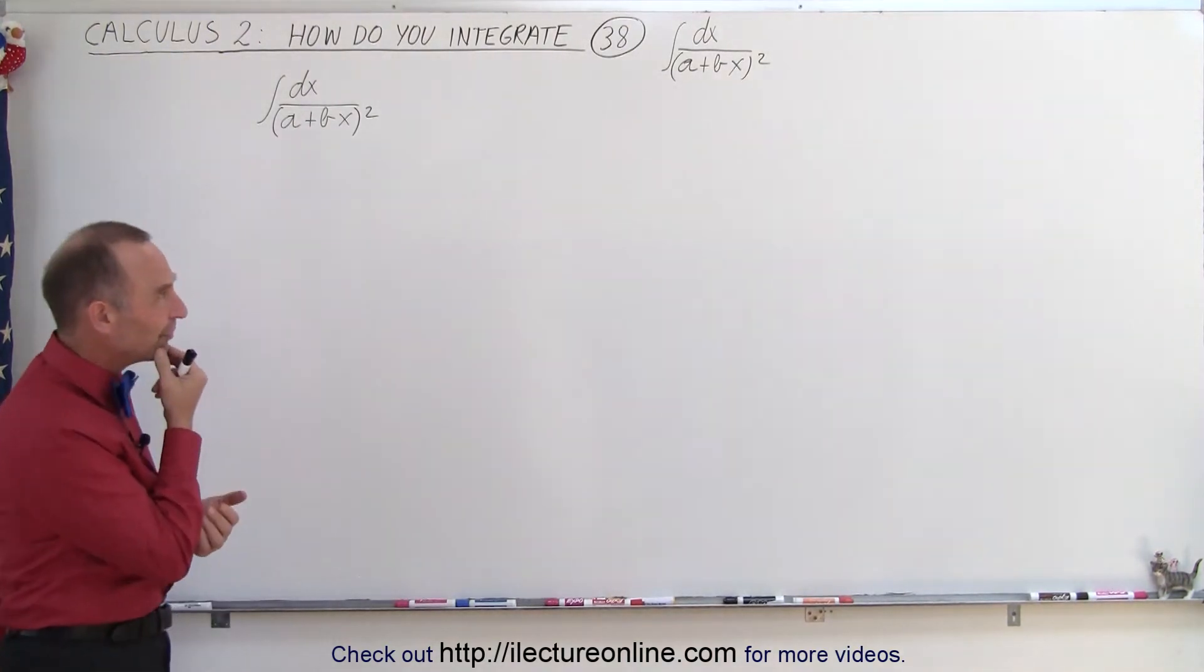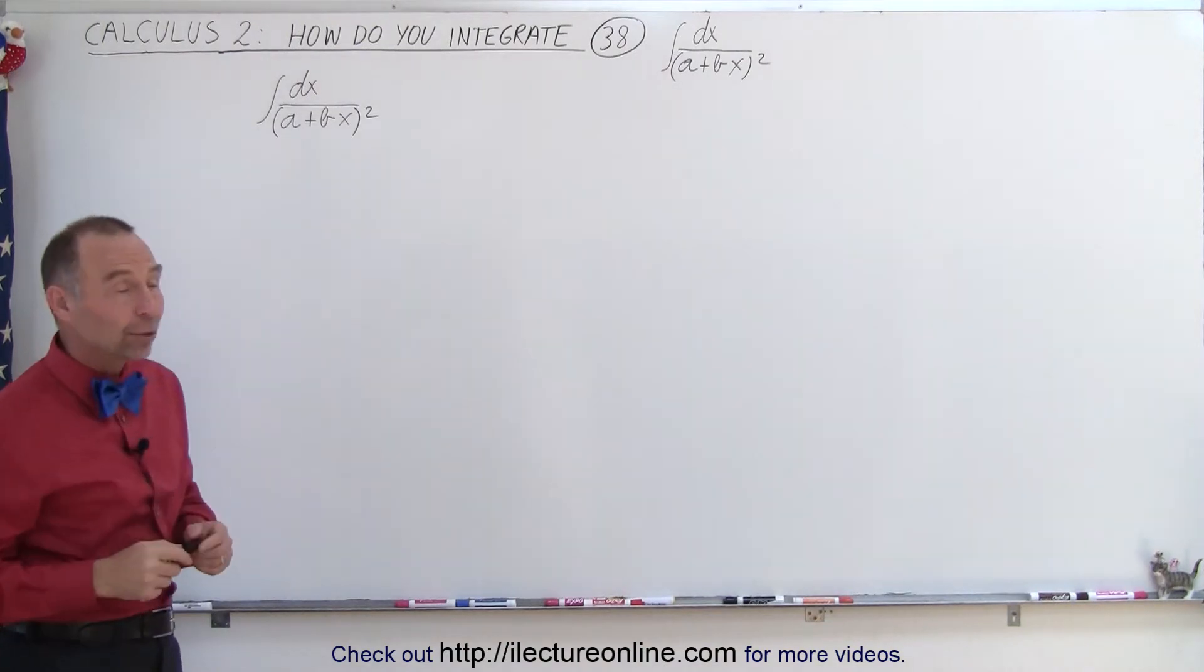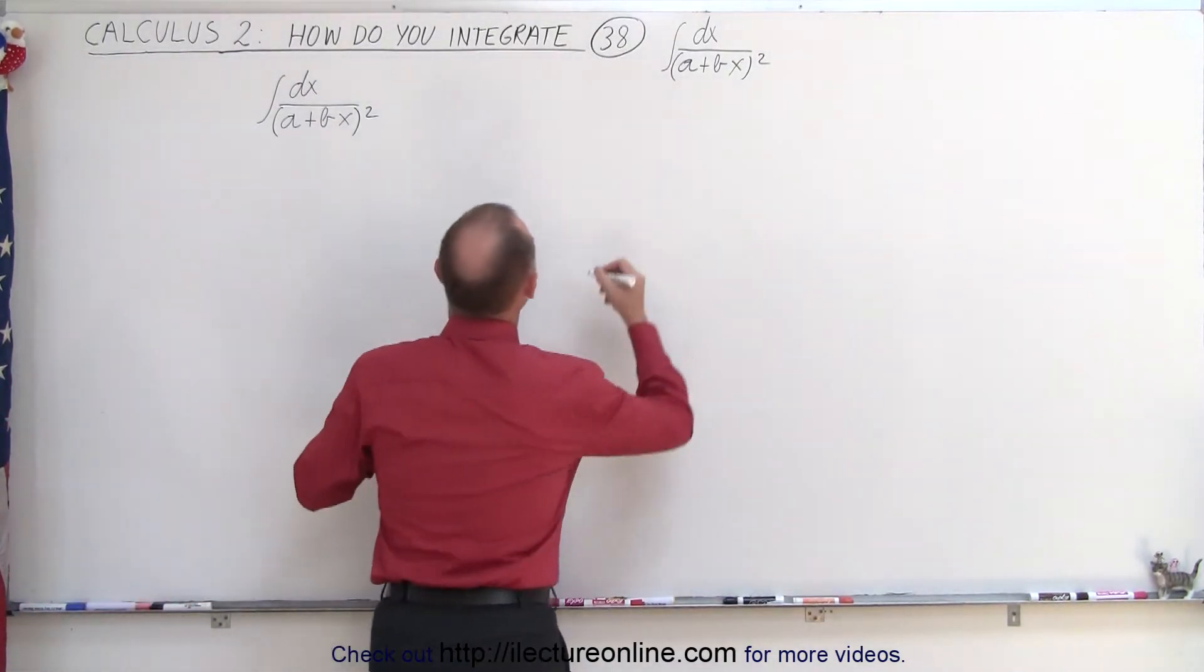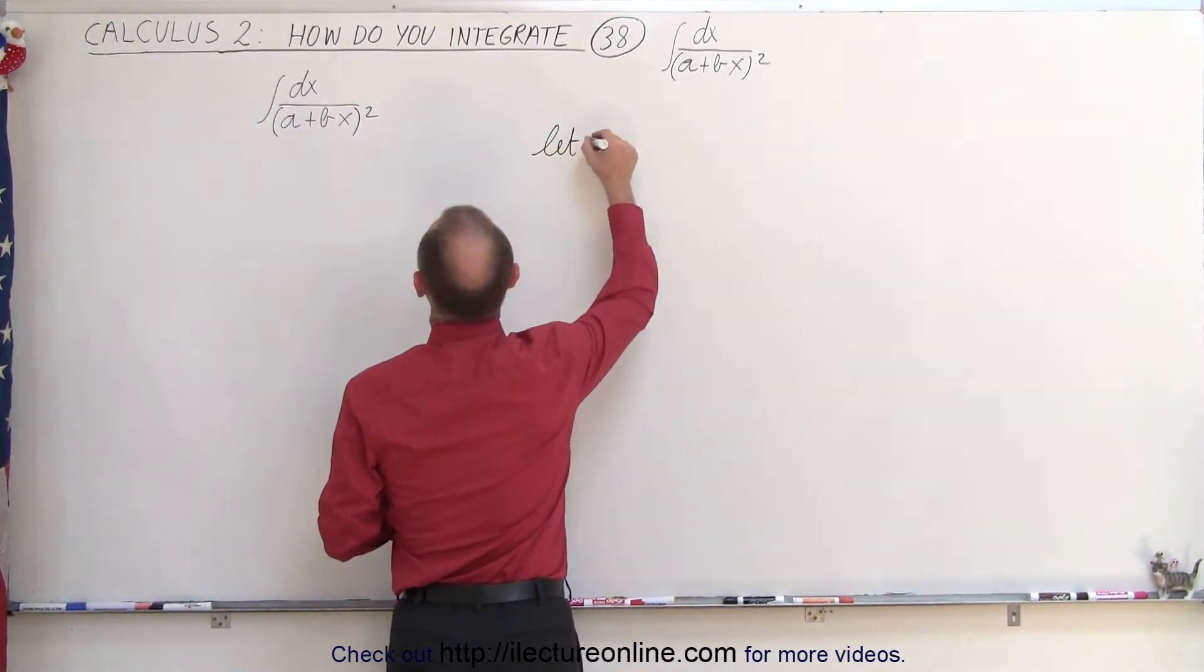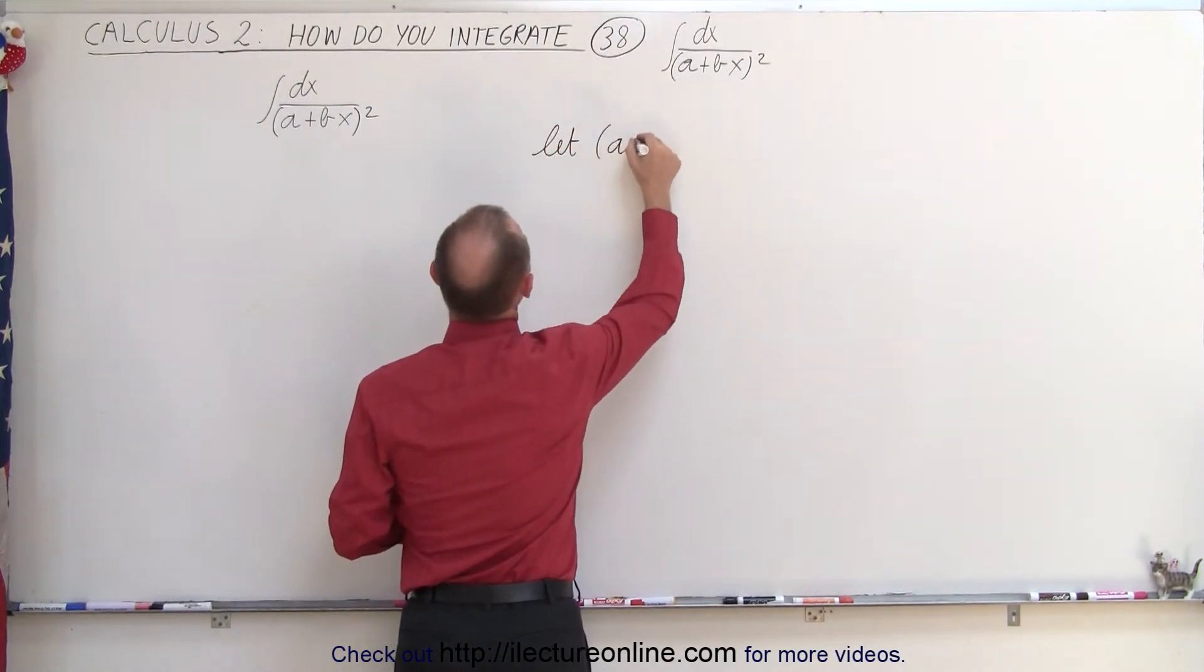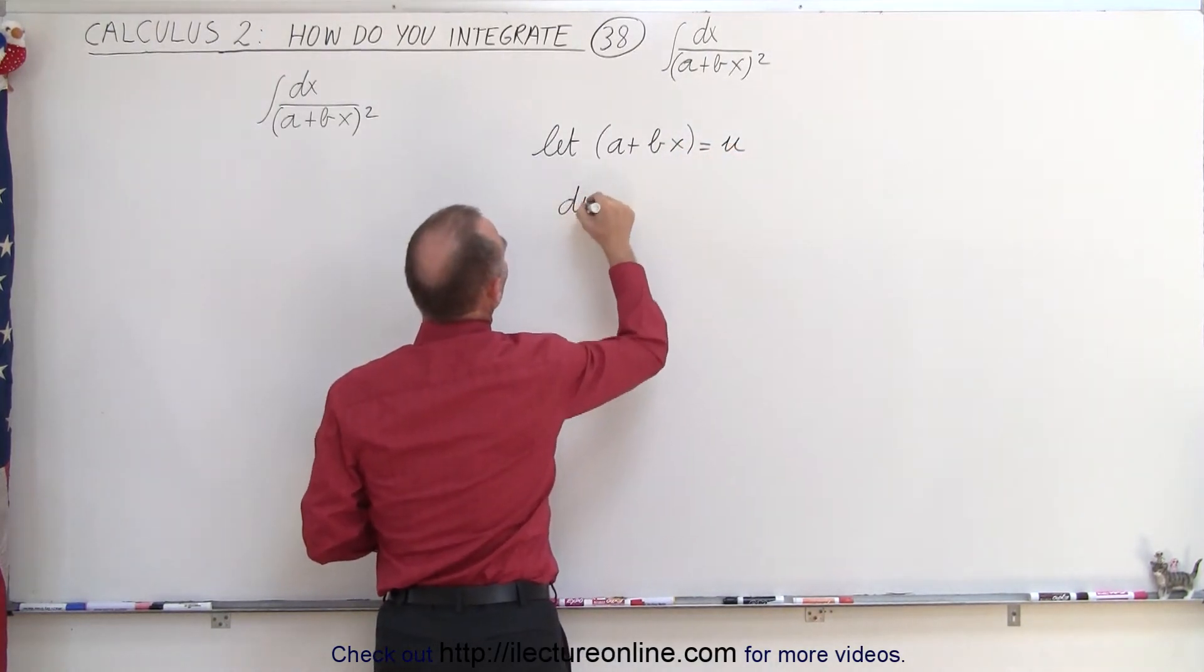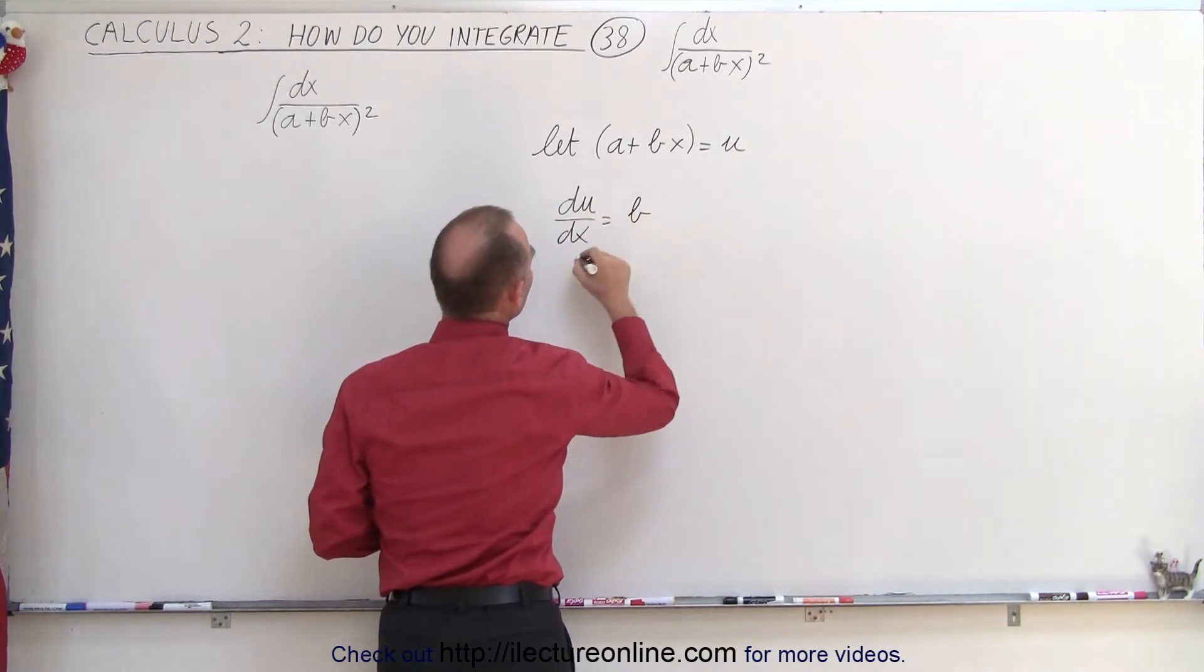Now you may say, well, maybe this is more difficult, but it ends up not being all that hard either, because what we can do is the following. We can first say, let the quantity a plus bx equal u, and then we can say that du dx is equal to the derivative of that, which would be b, so du equals b dx, or dx is equal to du divided by b.